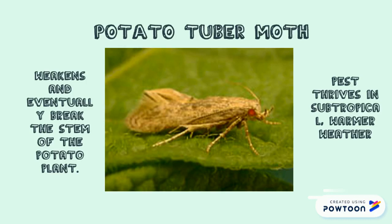This life cycle can last from anywhere between 17 and 125 days. The pest is transmitted by wind up to 250 meters to further infect more potato crops. The potato tuber moth does not leave the plant until the plant is harvested. The pest thrives in subtropical, warmer weather.